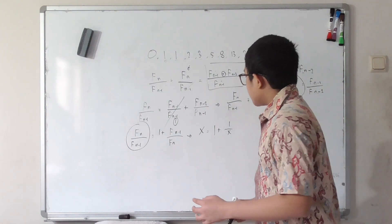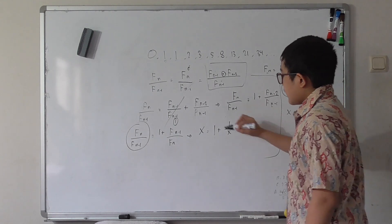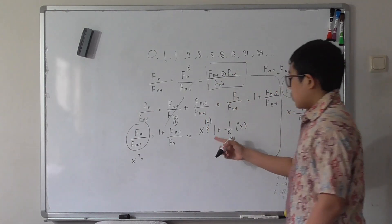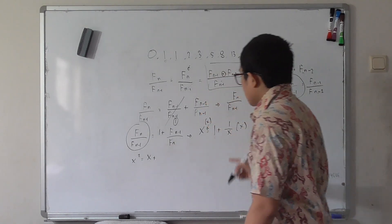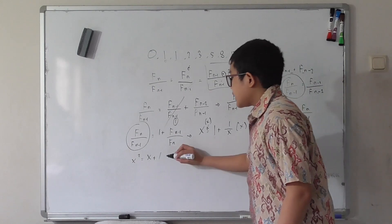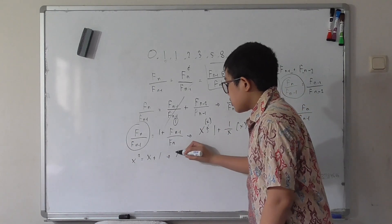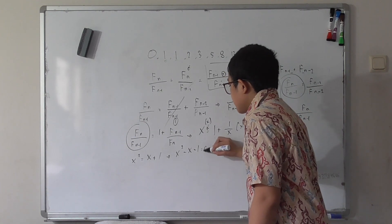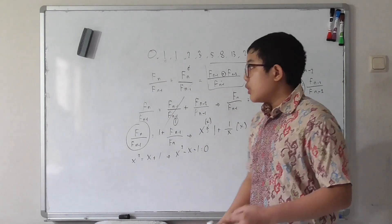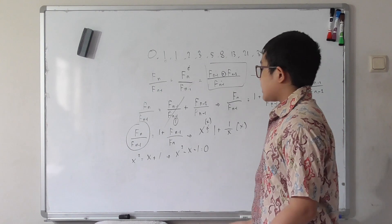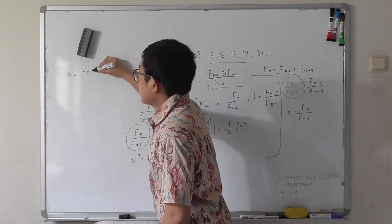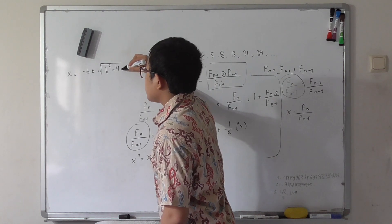Multiplying both sides by x: x times x gives x squared, equals x plus 1. Rearranging, we get x squared minus x minus 1 equals zero. This is a simple quadratic equation, and we can solve it using the quadratic formula: x equals negative b plus or minus the square root of b squared minus 4ac, all over 2a.